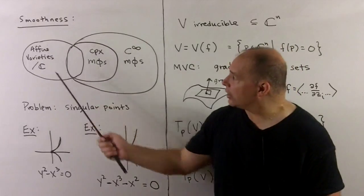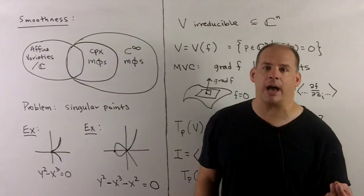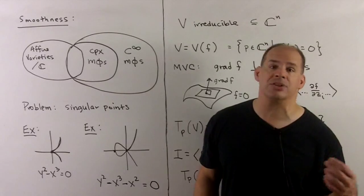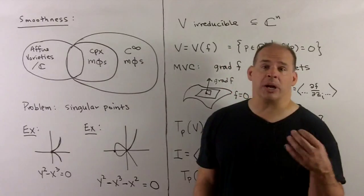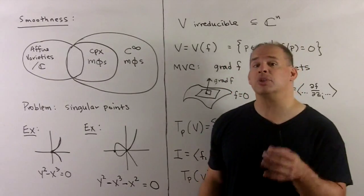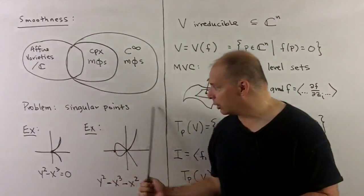Depending on our setting, we could farm problems out to algebraic topology, differential geometry, complex geometry, and so on. What that leaves for algebraic geometry is to study where smoothness breaks down, and so that's going to be the study of singular points.